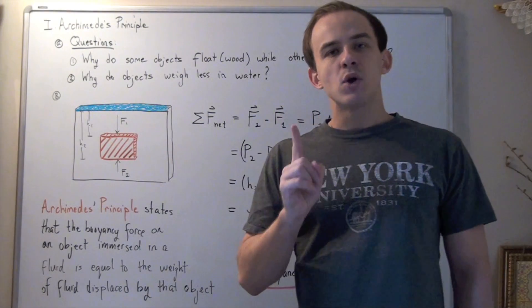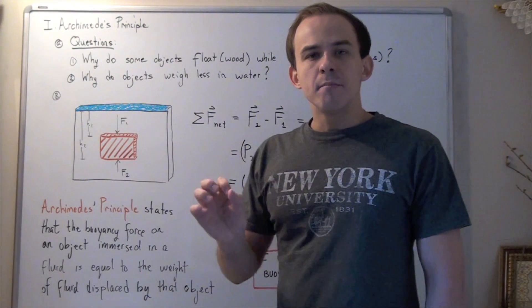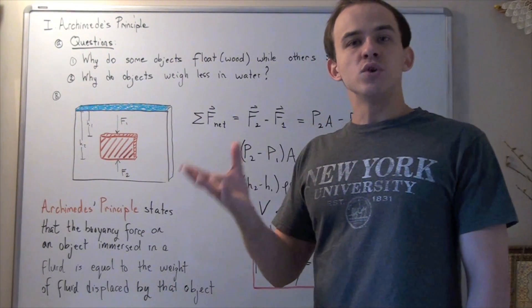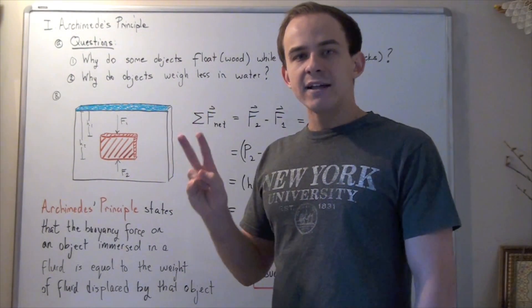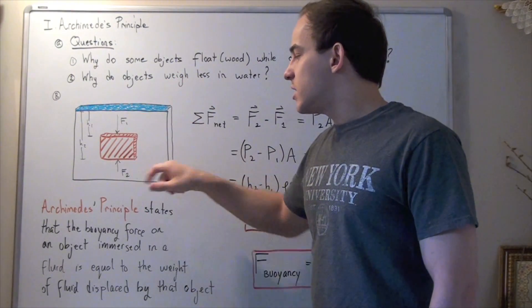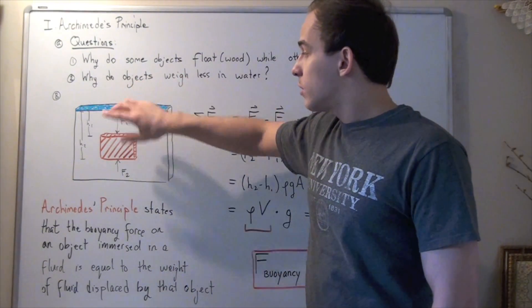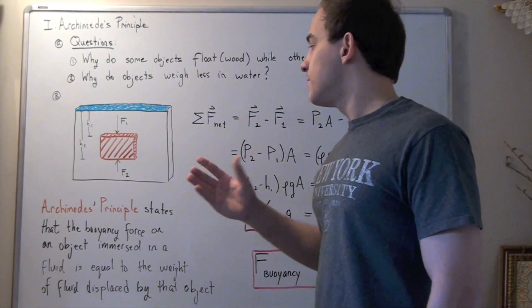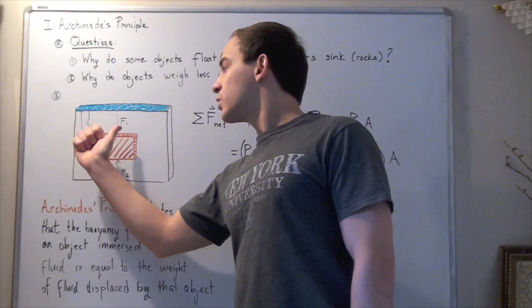Now I want to examine all the forces acting along the Y axis, along the Y direction. Remember, whenever you submerge a solid object into a fluid, the fluid will exert a force on that object on every side of that object. So there are two forces acting along the Y axis: force number one and force number two. Force number one is the force due to the fluid exerting on our block going downward. Likewise, the fluid also exerts a force going upward, as well as forces in other directions.